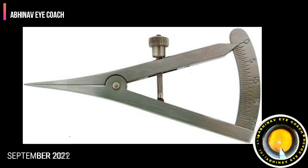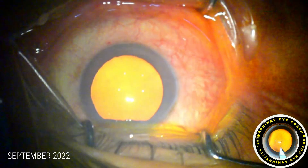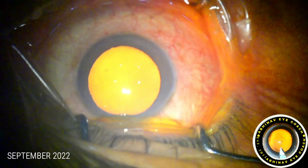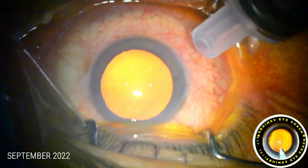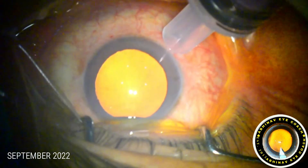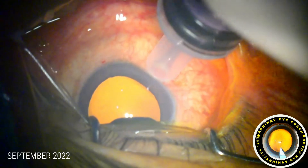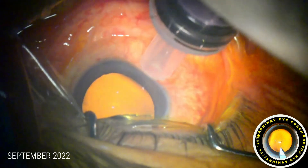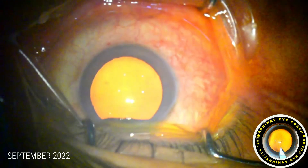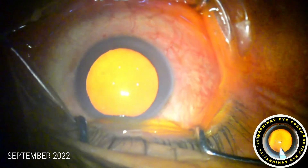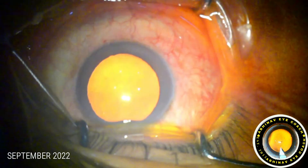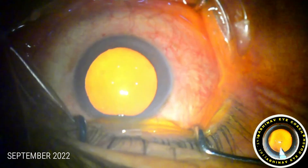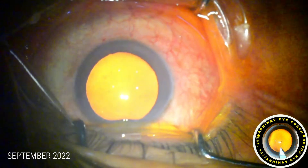We measure this distance from the limbus with the help of Castroviejo calipers. I usually use the hub of a standard 3 ml or 2 ml syringe to measure this distance, which is roughly equal to 3.5 mm. Different markers are also available in the market — you can use those or Castroviejo calipers. We first mark the distance.